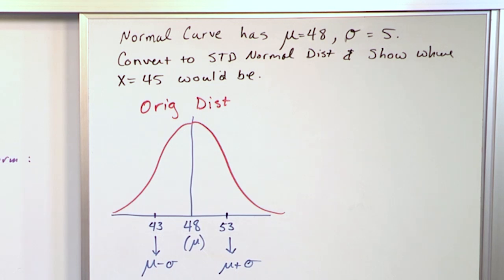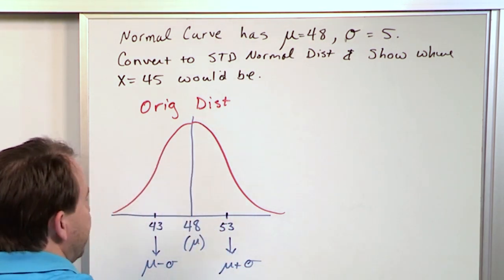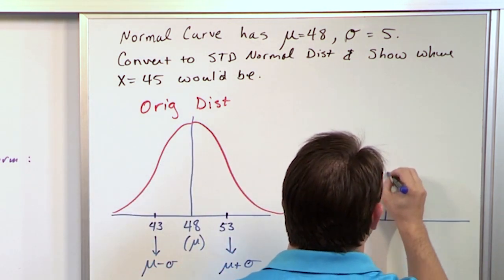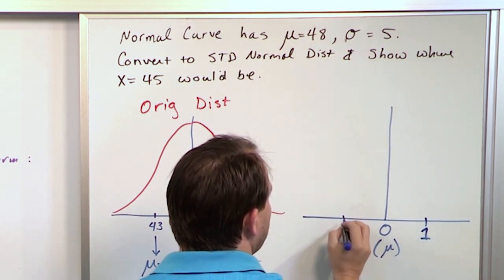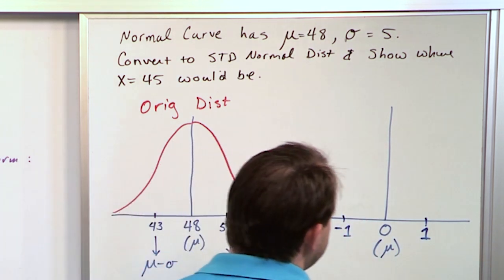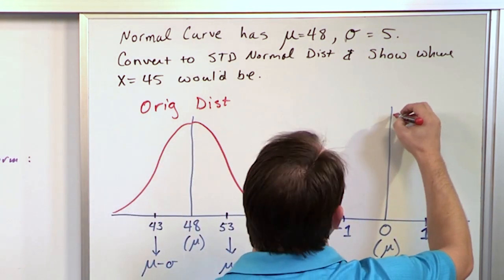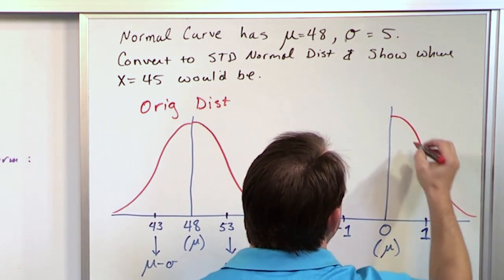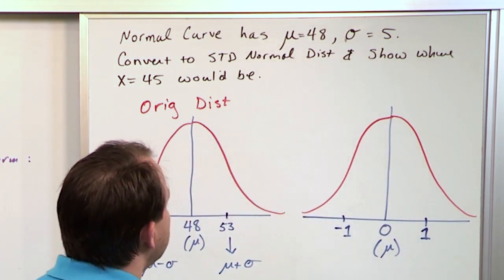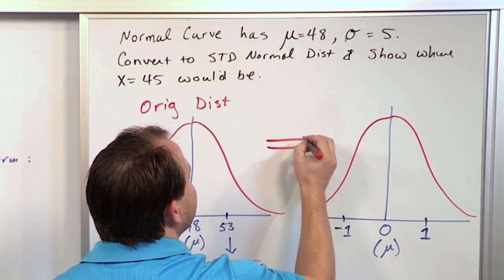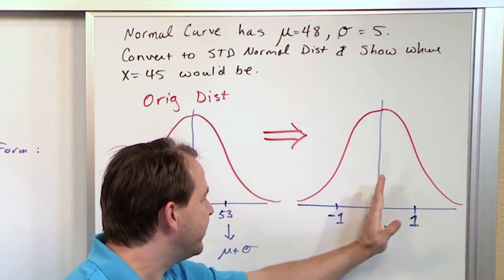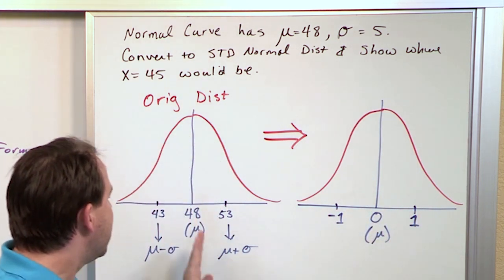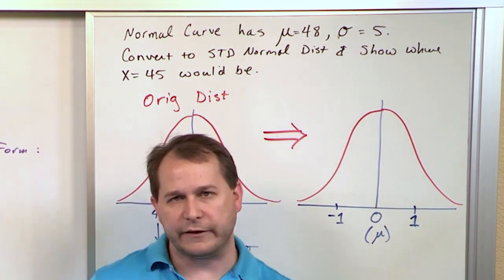The standard normal distribution has the same bell shape, but the mean is 0 and the standard deviation is 1. So let me draw another distribution next to it. The mean is 0, and we put one standard deviation at +1 and one at −1. They look the same — this is just a different way of representing the original distribution, centered around 0 with a standard deviation of plus or minus 1.